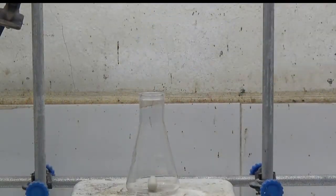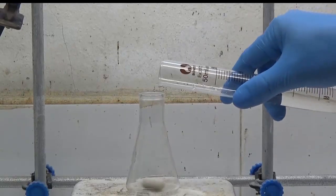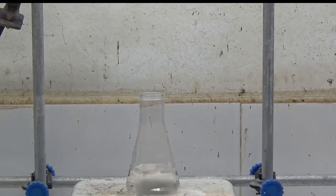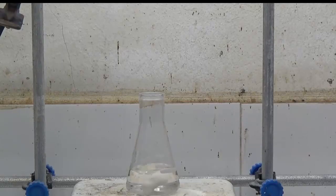Furfuraldehyde reacts with aniline acetate to produce a red colored solution. The identification of furfuraldehyde will involve aniline, acetic acid, and a dilute solution of furfuraldehyde.